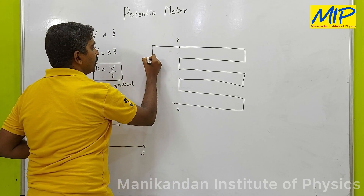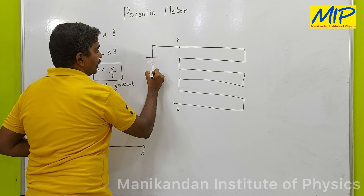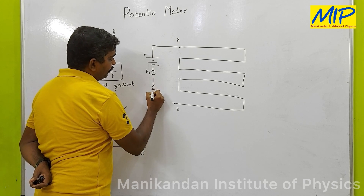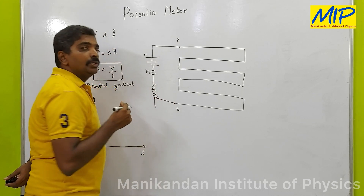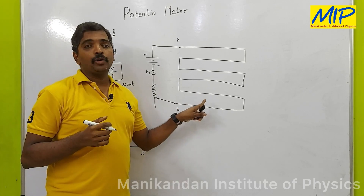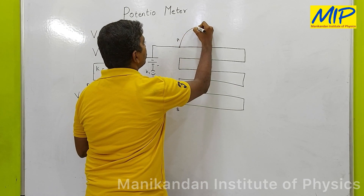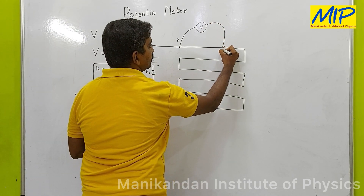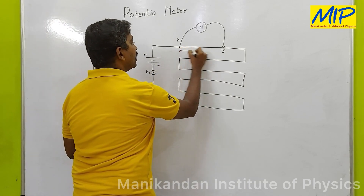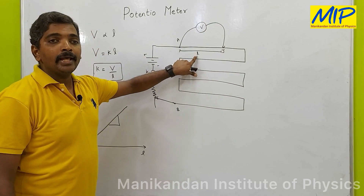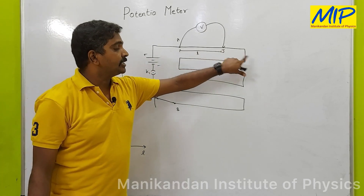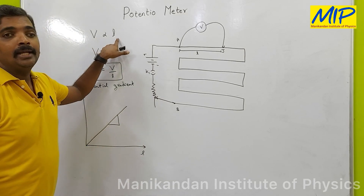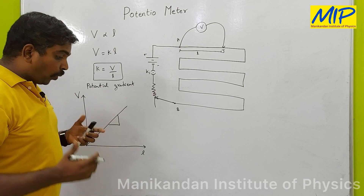One end of the meter bridge is connected with a battery eliminator and a key K1 — this is the positive terminal and this is the negative terminal. We also have a rheostat, which is used to vary the current through the potentiometer. A voltmeter is connected, and the jockey is placed at point J. As the length to the jockey increases, the potential drop across that length also increases, because it is in parallel — so V is directly proportional to the length of the wire.